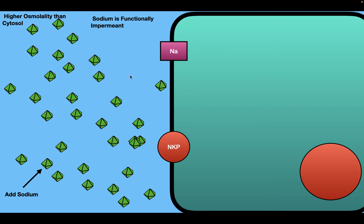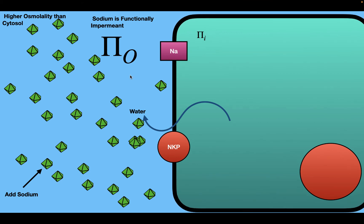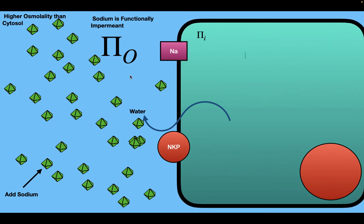So sodium is functionally impermeant. The result is that the osmotic pressure outside the cell is greater than inside, which means water moves across the membrane out of the cell into the solution. Therefore, the cell shrinks.